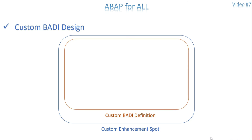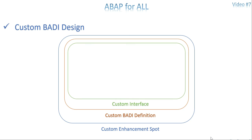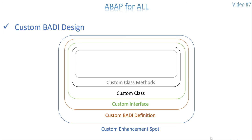Step two: create a custom BADI definition. Step three: create a custom interface - that is very important. You know the hierarchy of BADI implementation from the last video: interface, classes, standard interface. The interface has its own methods but no coding or implementation inside it. So we have to create a custom class for the interface; automatically the methods available in the interface will be listed in your custom class. Then you can do an implementation for whichever method you want. So you need to create a custom interface, then create a custom class. Finally the class has methods - whatever methods are available in the interface automatically come to your class. The methods are coming from the interface, not from your class.